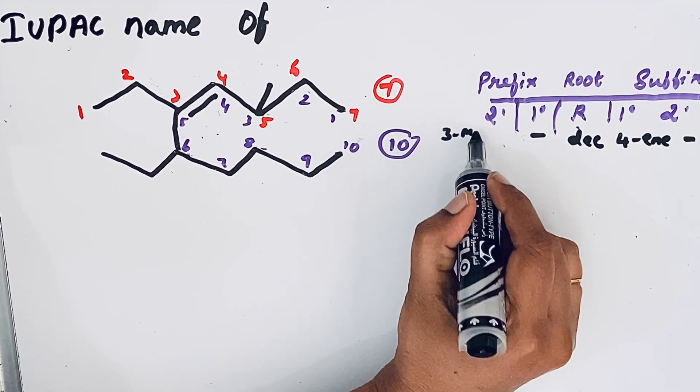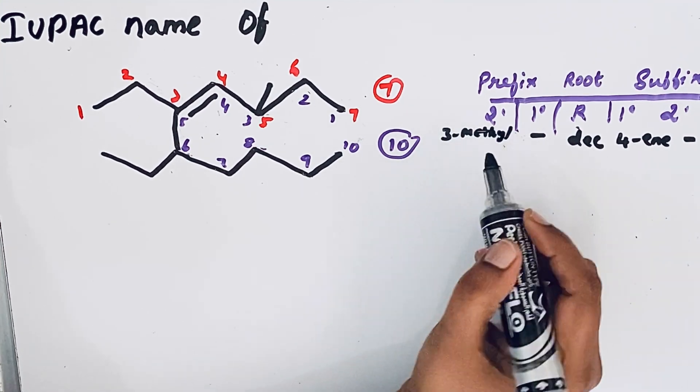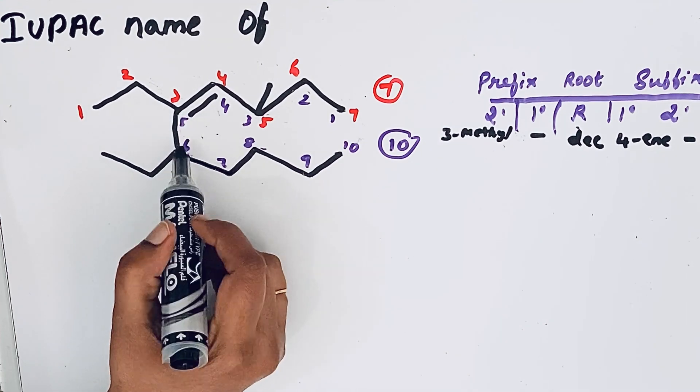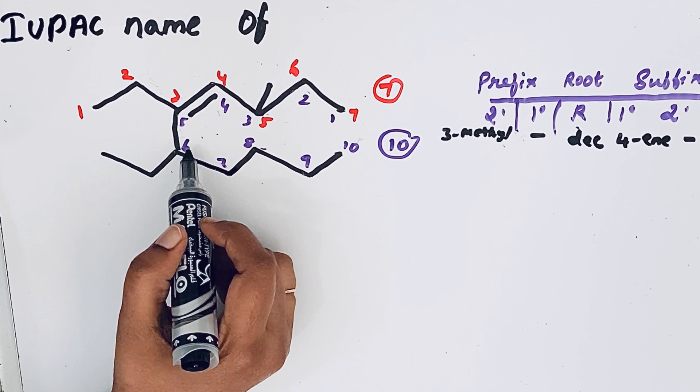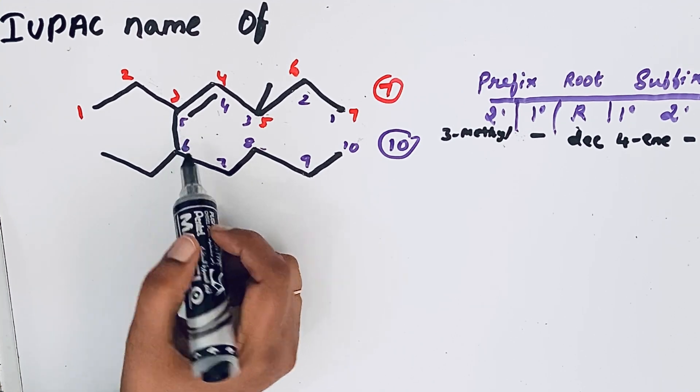So let us write 3-methyl. Then two ethyl groups are present in different positions, five and six, so we can write 5,6-diethyl.